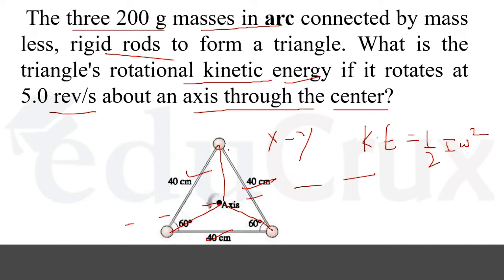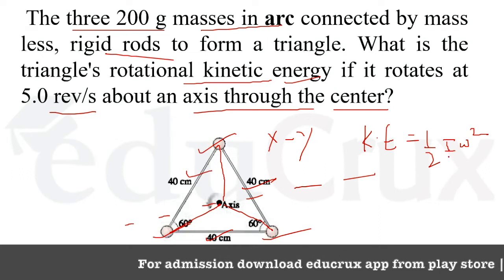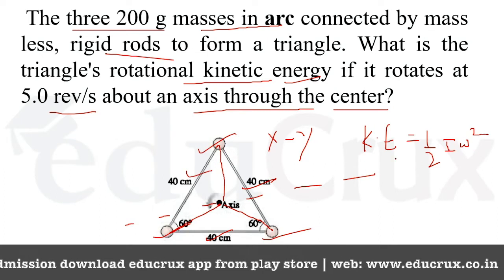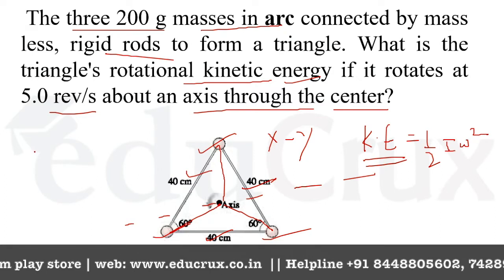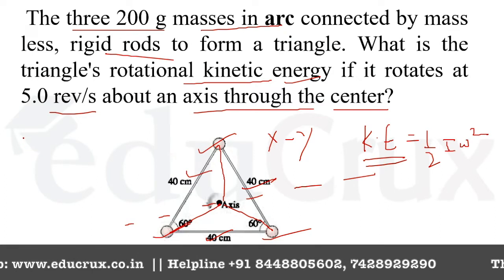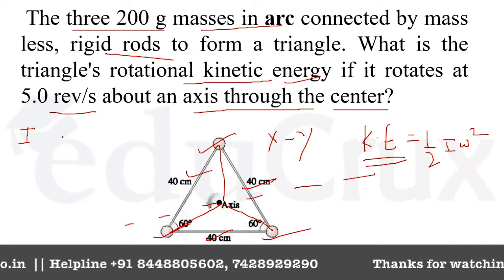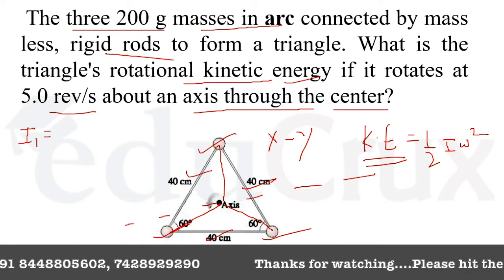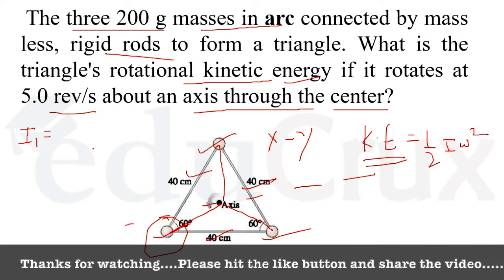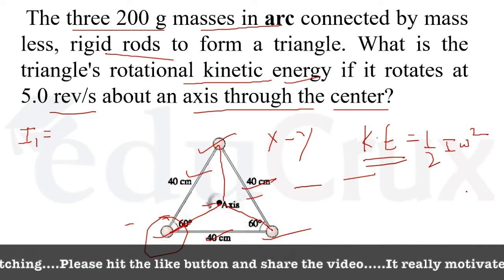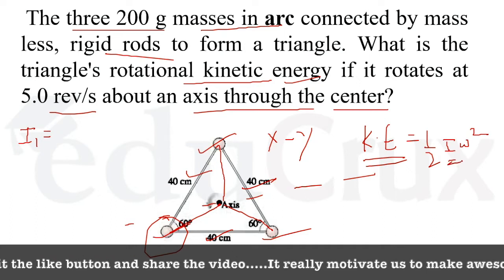What we do is omega for these three masses is the same, so we can find I for these three masses and put it in this equation. We square the omega and then we find the kinetic energy. First we'll calculate the moment of inertia for this ball and multiply it by three to get the total, then put this in the equation.